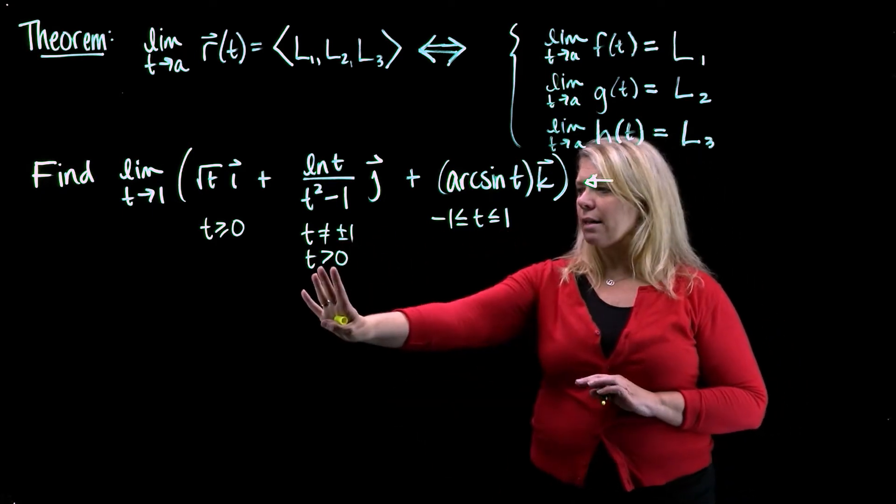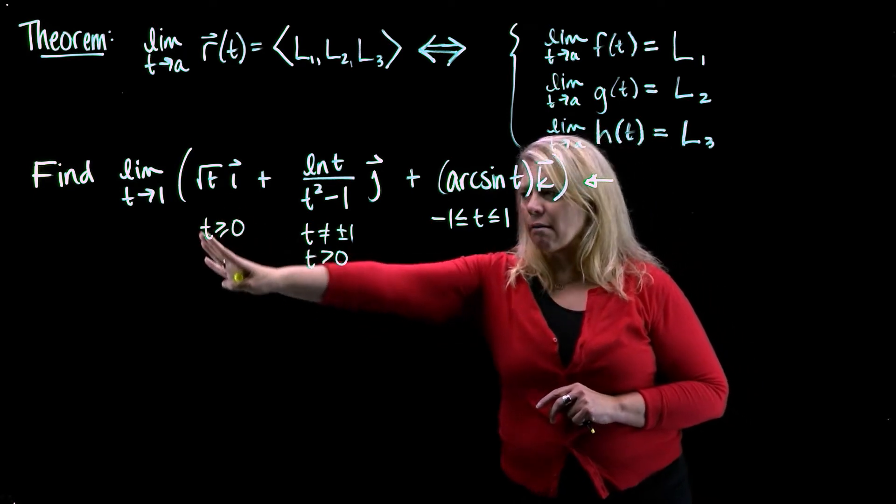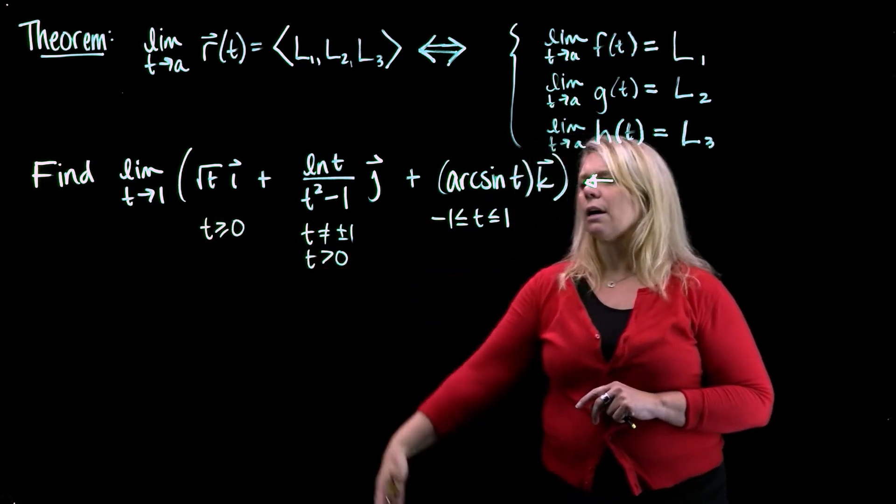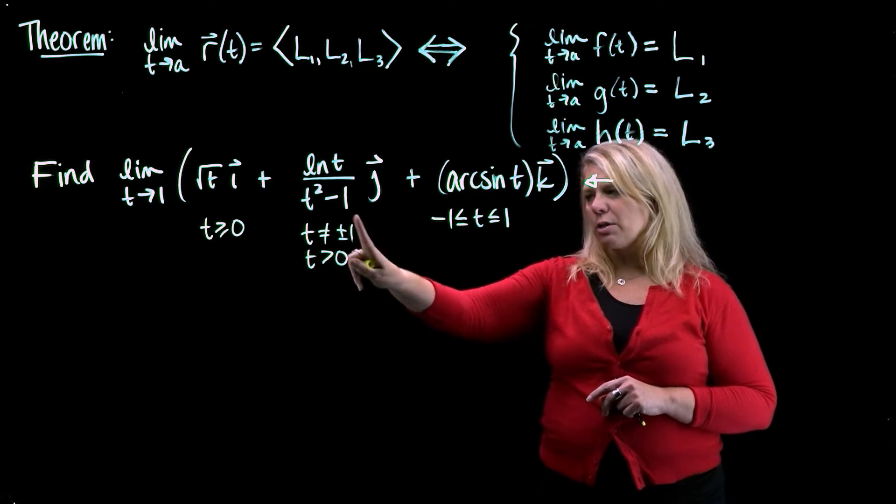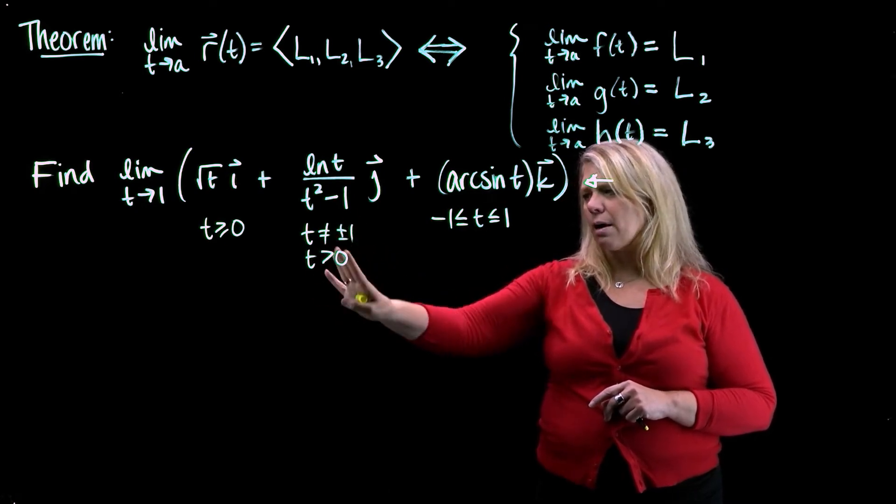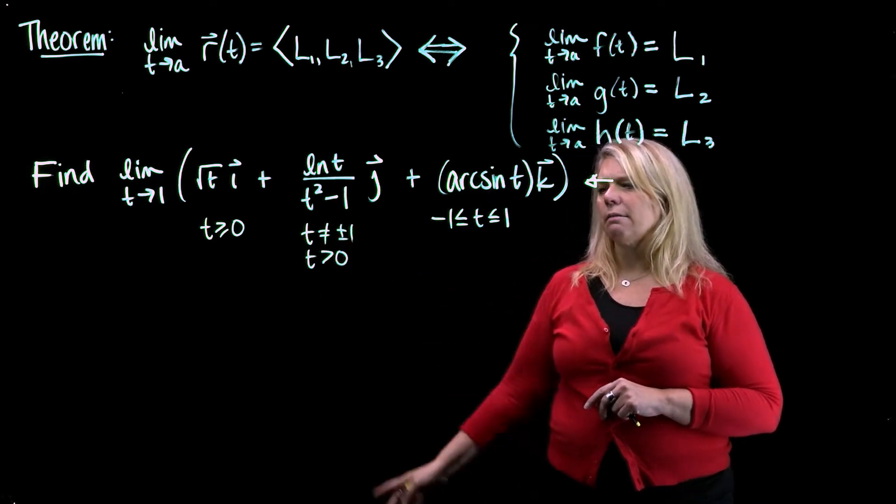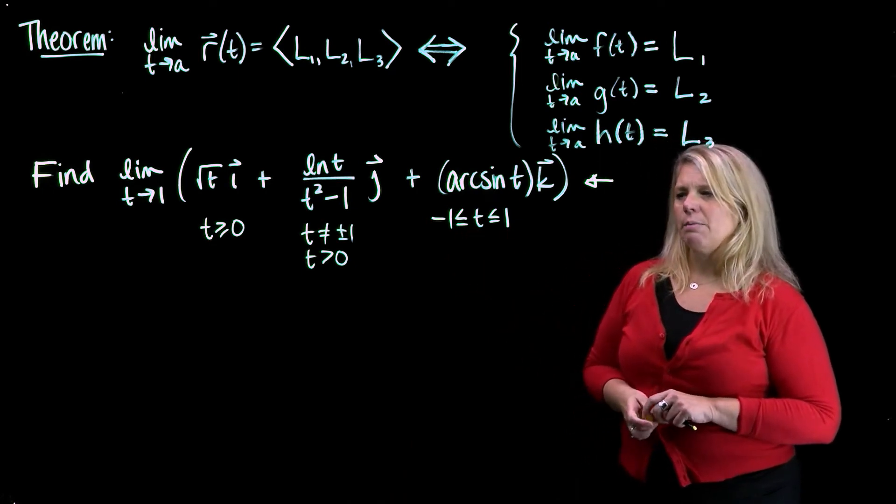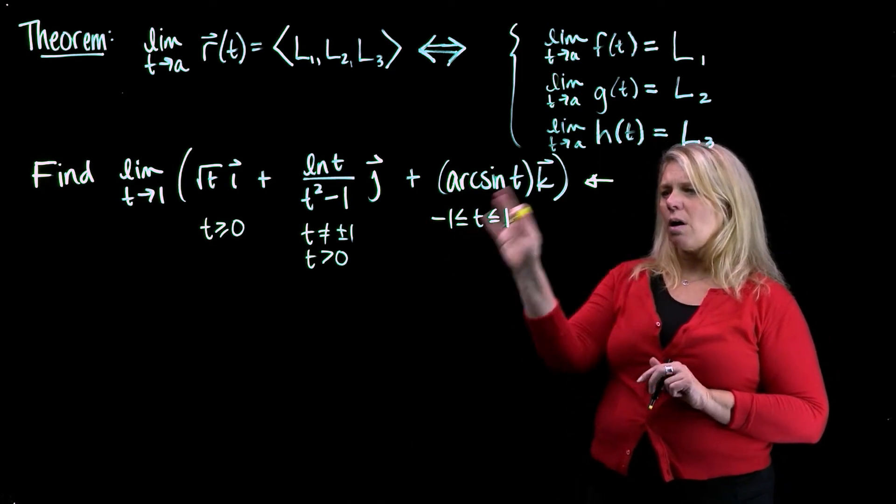Right, t greater than 0 already agrees with this, but excludes the t equals 0. t cannot equal plus or minus 1, so the minus part is already restricted by t greater than 0. And then this forces t to be between negative 1 and 1. So if I put all of that together...